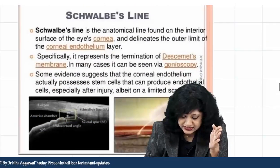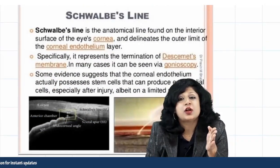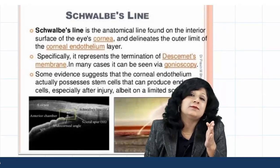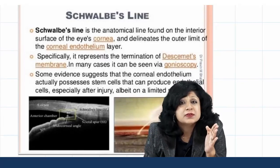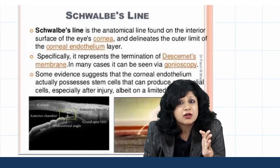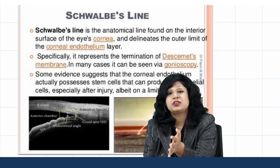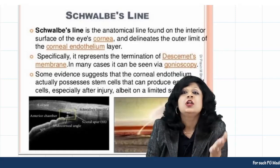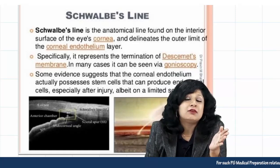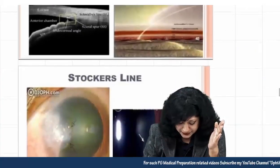Schwalbe's line is the prominent end of Descemet's membrane of the cornea and is one of the structures of the angle of the anterior chamber, found on gonioscopy.